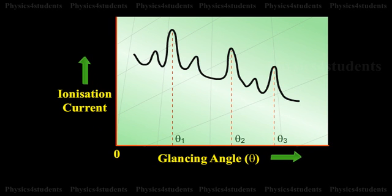The first peak corresponds to first order, the second peak to second order and so on. From the graph, the glancing angles for different orders of reflection can be measured. Knowing the angle theta and the spacing D for the crystal, wavelength of X-rays can be determined.